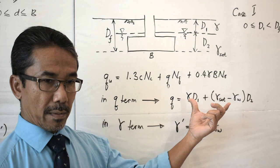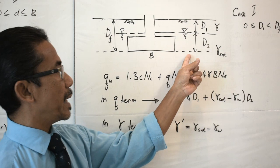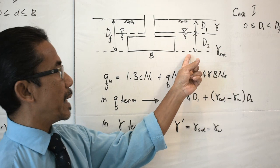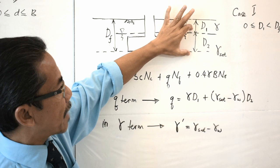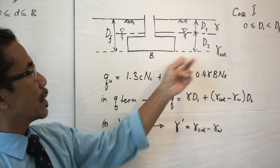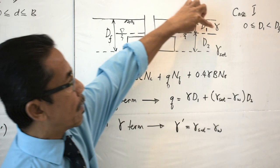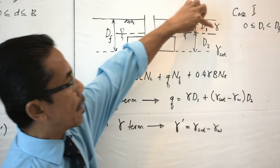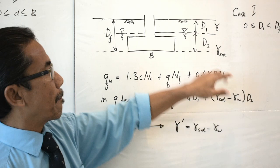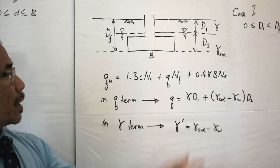We have to take into account both unit weights to calculate q, the stress at the base level of the footing. So q is expressed as gamma multiplied by d1, plus (gamma_saturated minus gamma_water) multiplied by d2. In this case, q is expressed in terms of effective stress: gamma·d1 + (gamma_sat − gamma_w)·d2.